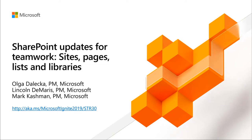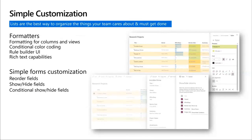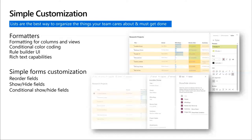Focusing on simple customization — we started by giving power users the ability to format list columns and views through JSON. It got great usage. Even people unfamiliar with JSON picked it up, and we saw awesome community participation with GitHub repos full of column and view format examples. At SharePoint Conference, we showed how we're now using the same JSON but driving end-user productivity through a UI, so you don't have to type JSON directly.